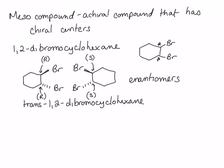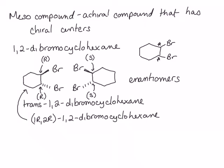Now take a moment and pause the video and see if you can write the names for these two compounds. The structure on the left will be called 1R,2R-1,2-dibromocyclohexane. The structure on the right will be 1S,2S-1,2-dibromocyclohexane.